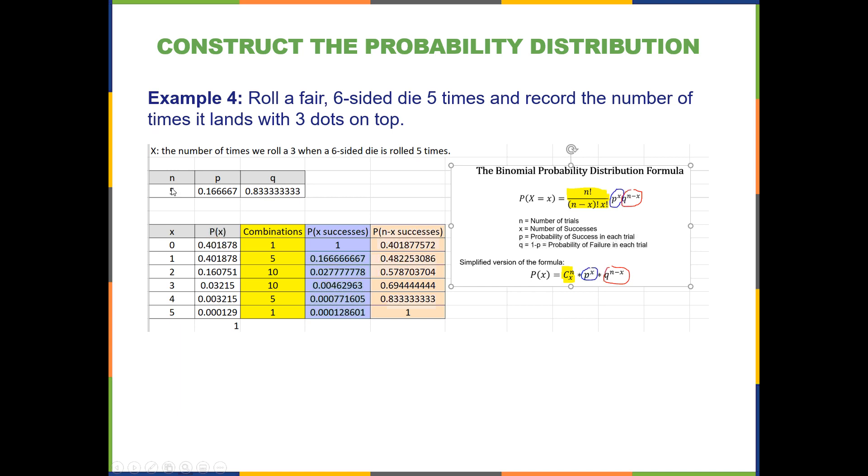And then I used those values along with my numbers of successes that could happen. I could get zero threes out of five rolls, or only one three out of five rolls. And that one three could be the first, second, third, fourth, or fifth roll. So there were several different outcomes that would satisfy one success out of five, and so on. So I have zero successes, one success, two, three, four, up to five successes, meaning that all the rolls landed on three.